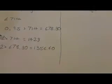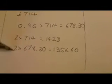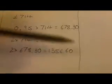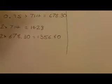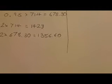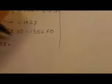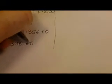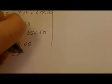So that's two adults, two times 714, which is £1,428, and two times £678.30, which is £1,356.60. To find the total cost of my holiday then for seven nights, I'm going to add £1,428 to £1,356.60, which equals £2,784.60.